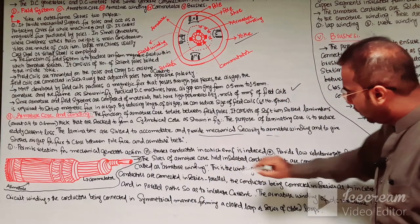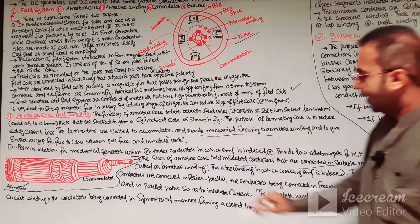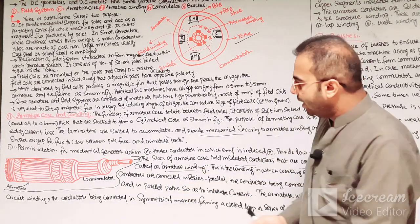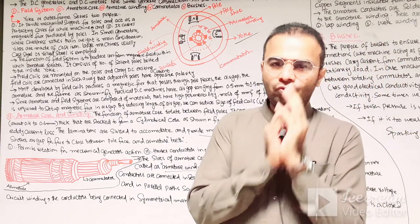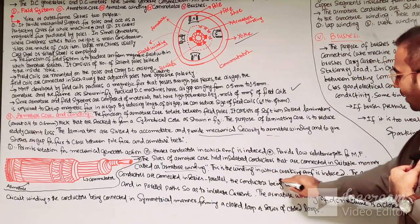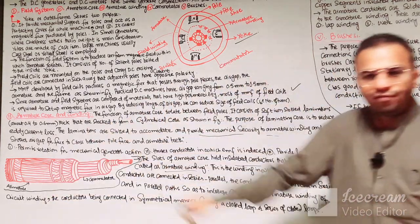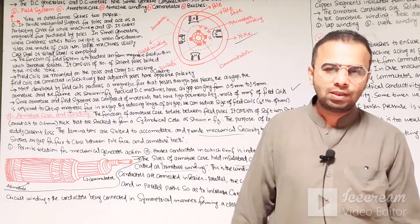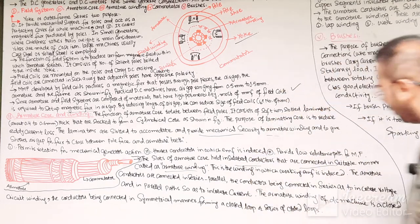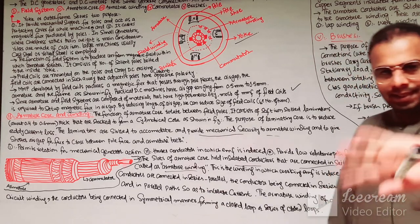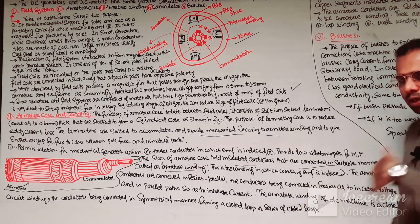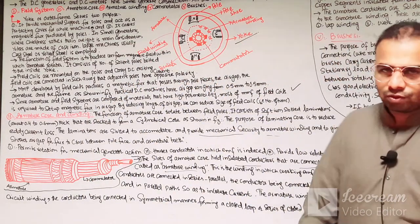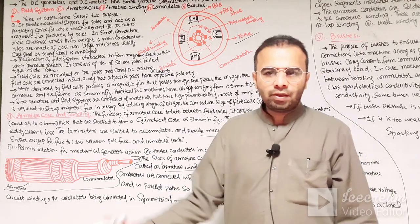The slots of the armature core hold insulated conductors connected in a suitable manner, called the armature winding. This is the winding in which the working EMF is induced — generated EMF in the case of a generator, and back EMF in the case of a motor. The armature conductors are connected in series to increase the voltage, or in parallel to increase the current, depending on whether it is a series wound or parallel wound machine.